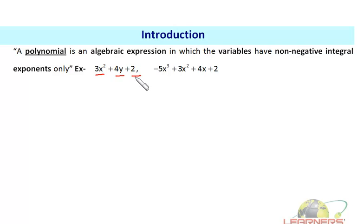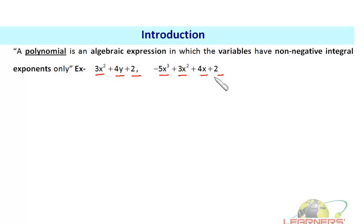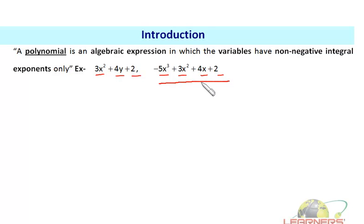In the expression 3x² + 4y + 2, the terms are 3x², 4y, and 2. Similarly, in −5x³ + 3x² + 4x + 2, the terms are −5x³, 3x², 4x, and 2. These are the terms of their respective algebraic expressions.